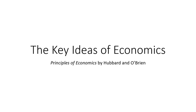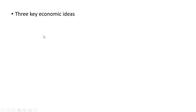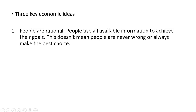Hello. This video will highlight the key ideas of economics as presented by Hubbard and O'Brien in their first chapter of Principles of Economics. They point to three key economic ideas. The first one is that people are rational. This means that people use all available information to achieve their goals. This doesn't mean people are never wrong or always make the right choice, however.